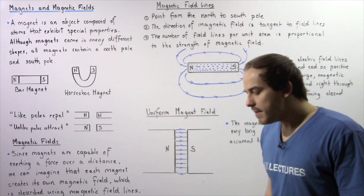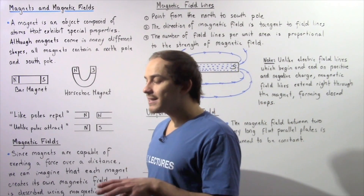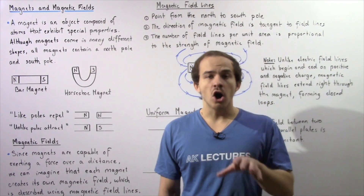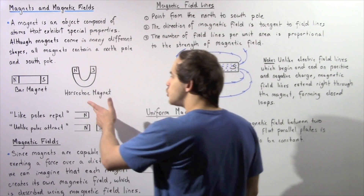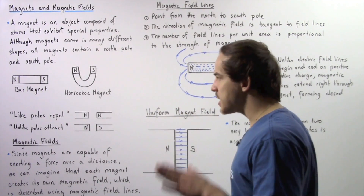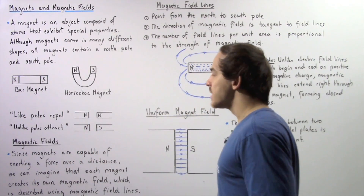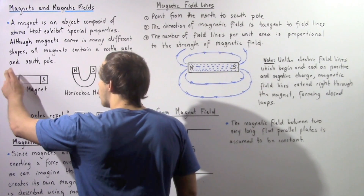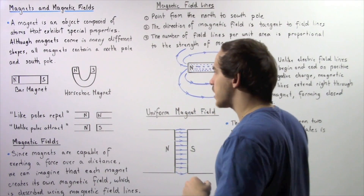Although magnets come in many different shapes and forms, all magnets contain a south pole and a north pole, and there are no exceptions to that rule. Here we have two types of magnets that have different shapes: a bar magnet and a horseshoe magnet. Both of these magnets will contain a north pole at one end and a south pole at the other end.